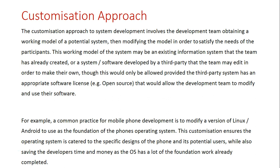They have to make sure they're meeting the licensing agreement if they are obtaining this from a third party. For example, a very common practice with mobile phones is that developers get either an Android or Linux-based operating system, which has one of these open-source codes, and then they modify that source code so that it suits the phone it's being built for.